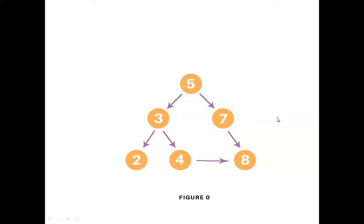7, 2, and 4 are in the queue. Now 7 will be picked and its child is 8. 2 and 4 are already there, so 8 will be added behind them. The queue is now 2, 4, and 8, while 5, 3, and 7 are already expanded. Next, node 2 will be picked — it does not have any child nodes. So the output so far is 5, 3, 7, 2, and the remaining elements in the queue are 4 and 8.